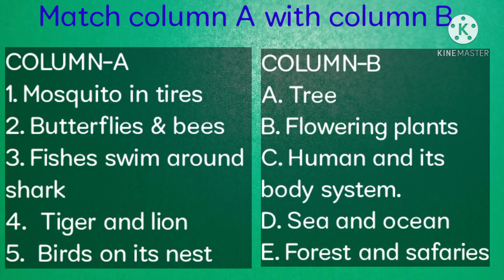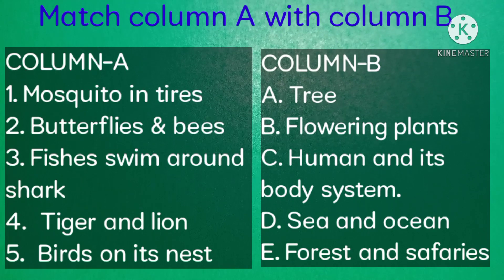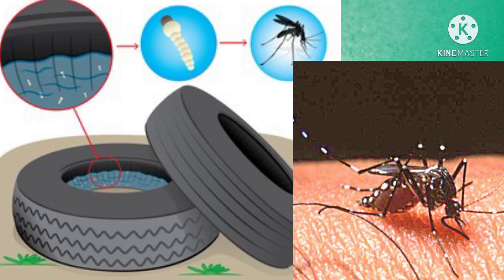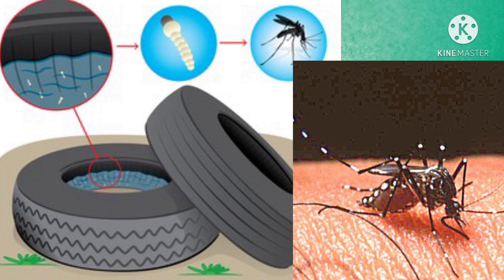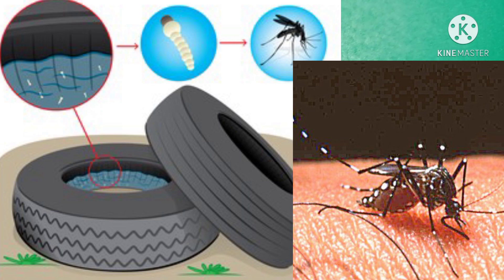For activity number two, match the interaction given in column A with the affected environment in column B. In column A we have mosquito in tires. The affected environment is letter C — humans and their body system. We know that mosquitoes can be a carrier of dengue fever viruses. This interaction is harmful.